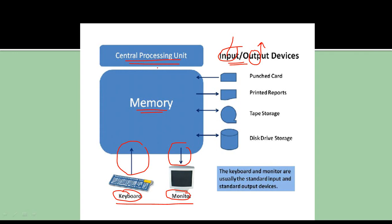The central processing unit controls and depends on memory to work. There is also a punch card — an input device — printed reports as output, and tape storage and disk storage. Tape storage is bi-directional, meaning you can save and retrieve data. Disk storage, meaning the hard disk, is also bi-directional — you can store and retrieve data at the same time.